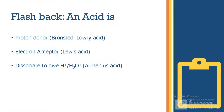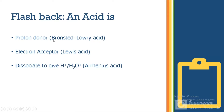An acid is basically a proton donor and electron acceptor, or the one which dissociates to give a proton or hydronium ion. We will approach the answer using the concept of acid as a proton donor — if a molecule has more tendency to donate a proton, then it will be a stronger acid, otherwise it is not.